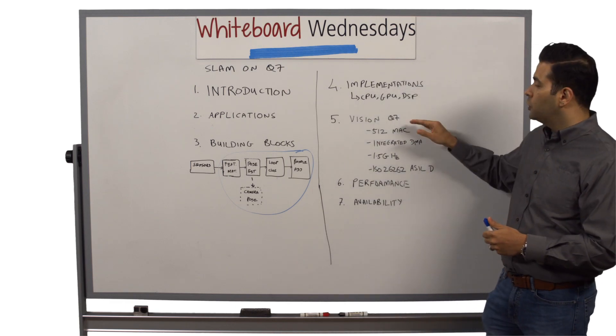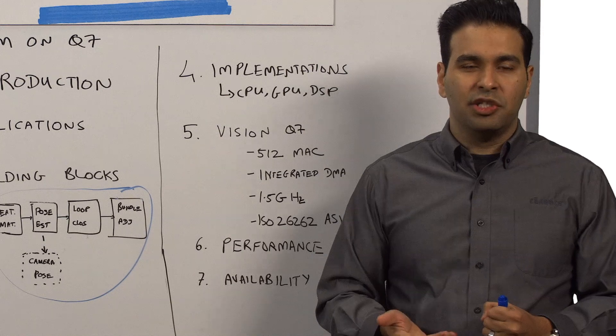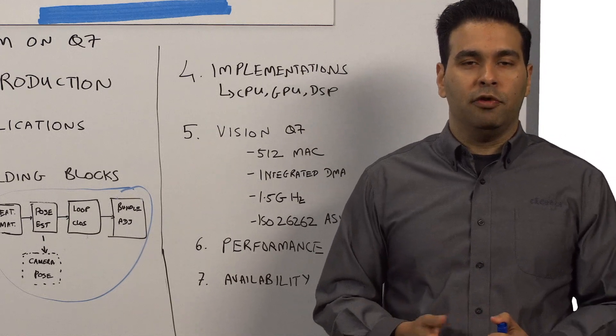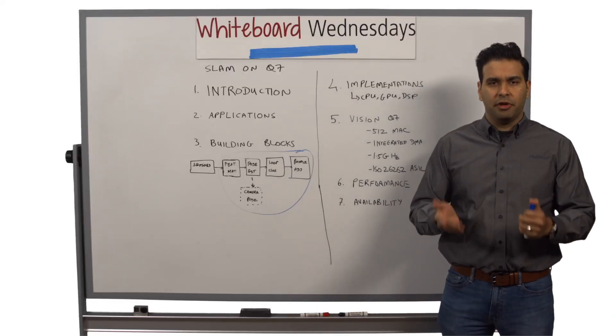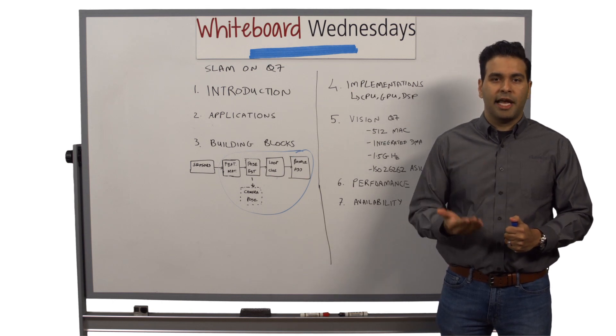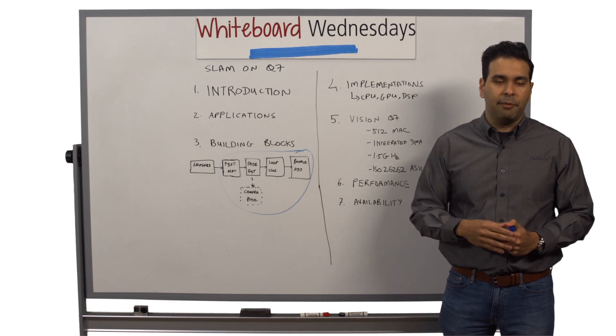This is where our Vision Q7 DSP comes in. Our Vision Q7 DSP is a sixth generation of Vision and AI DSPs from Cadence TenSilica family. It's our most powerful Vision DSP yet. It is built from the ground up, targeted to handle heavy computational loads of SLAM, SGBM, which stands for semi-global block-based matching, and similar applications.